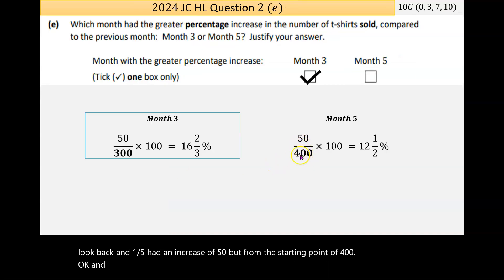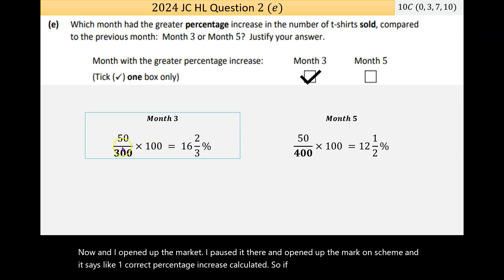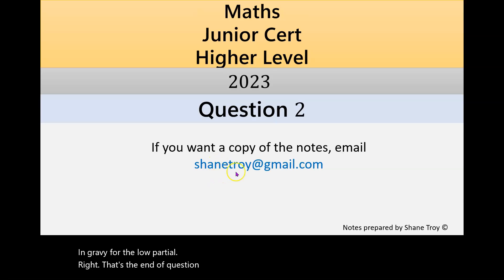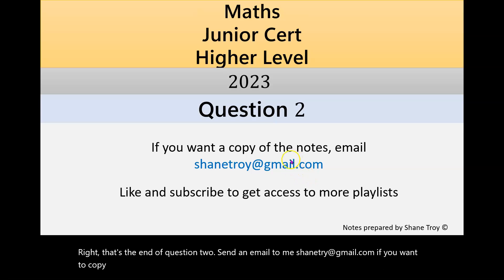That's actually fairly tricky. I opened up the marking scheme and it says one correct percentage increase calculated. If you weren't sure what you were doing, just try to find something. It says some work of merit, so three marks for some knowledge of percentages, multiply something by 100 in your gravy for the low partial. That's the end of question two. Send an email to me, shanetroy@gmail.com, if you want a copy of these notes. Like and subscribe to get access to more playlists, and see you on question three.